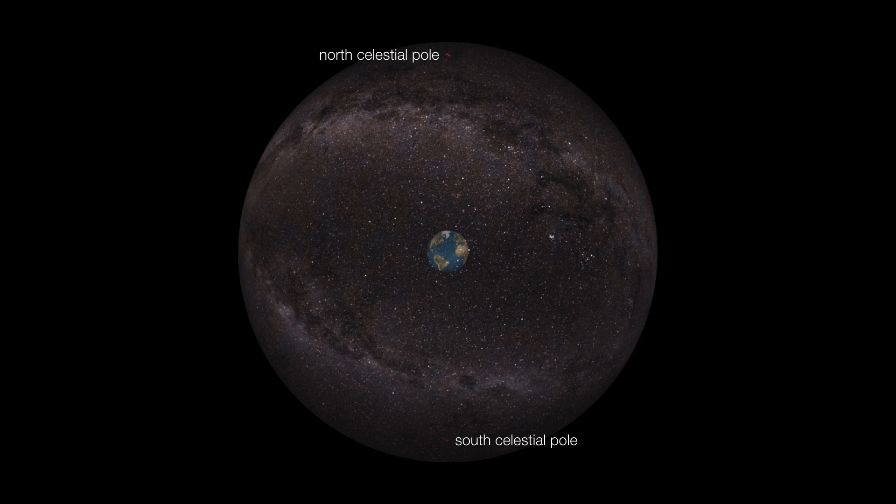So a quick reminder: here we are with the Earth suspended inside the celestial sphere. The celestial poles are just the projections of Earth's north and south poles, and the celestial equator is just the projection of Earth's equator.